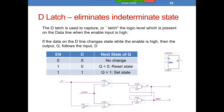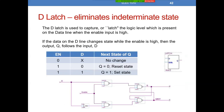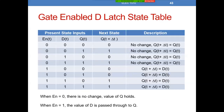Remember with the D latch, it's really easy. Whenever the circuit's enabled, whatever is sitting on input D flows through to the output Q. If we then write this in terms of a state table — this was more of a functional or behavioral table, we're specifying the behavior of the circuit — now if we want to put this in the form of a state table, we list all of our present state inputs.